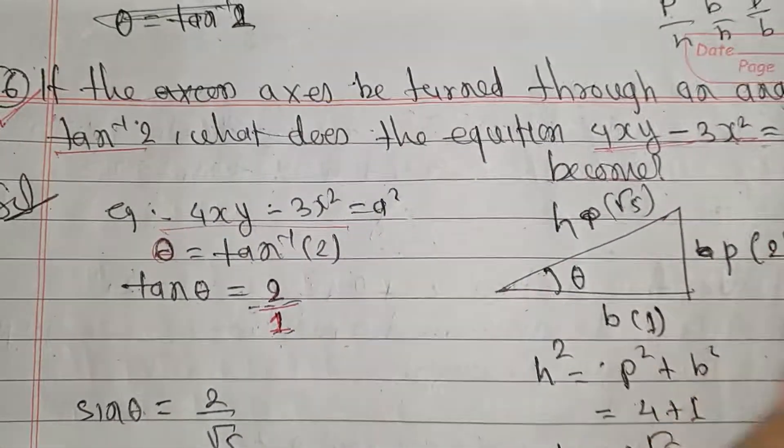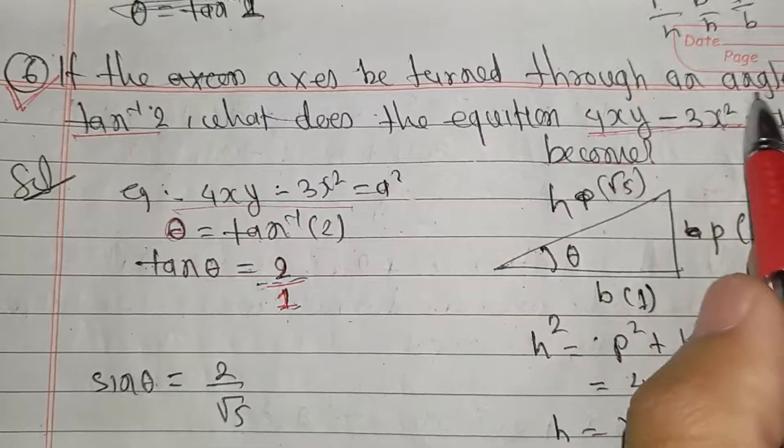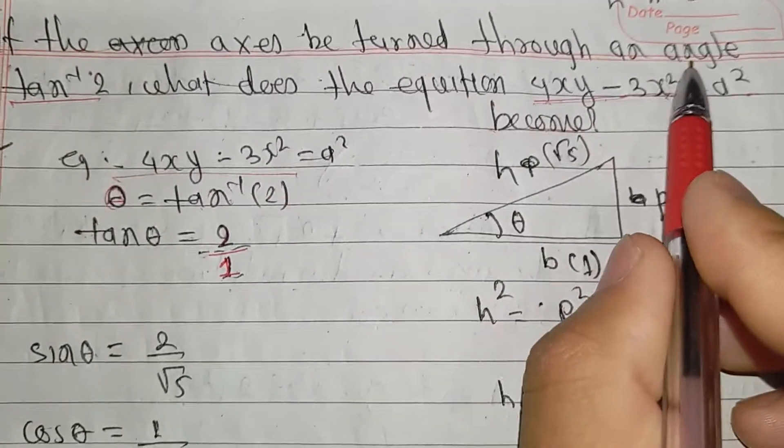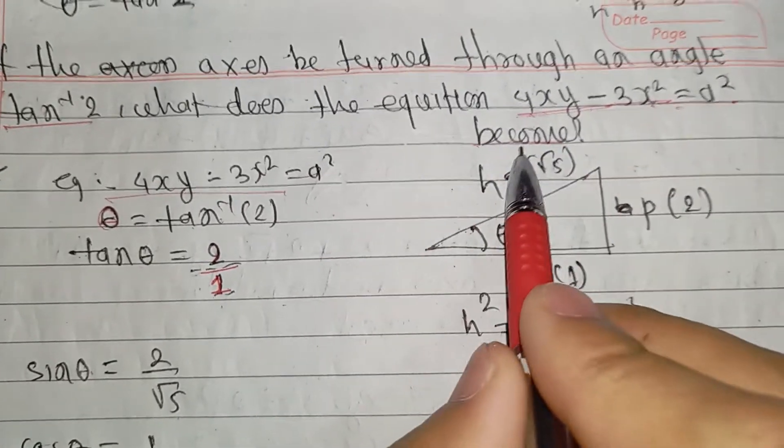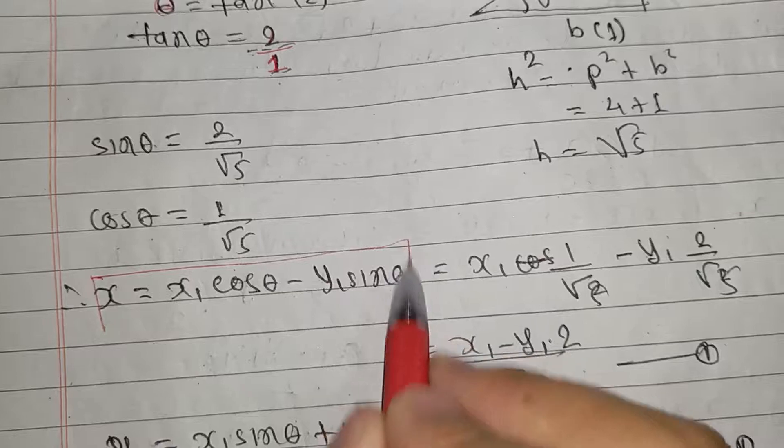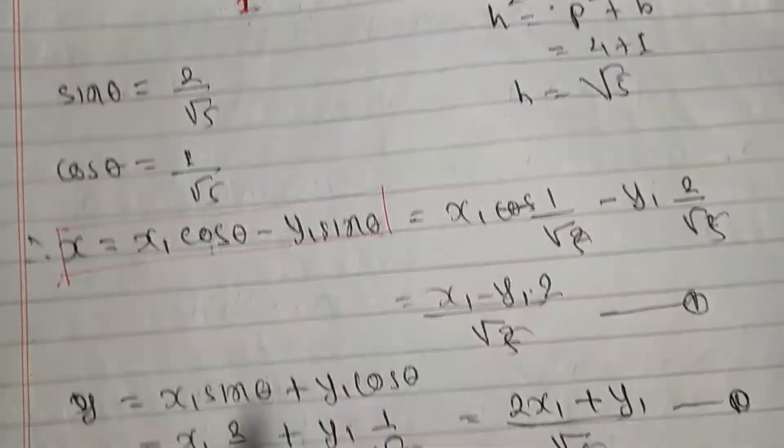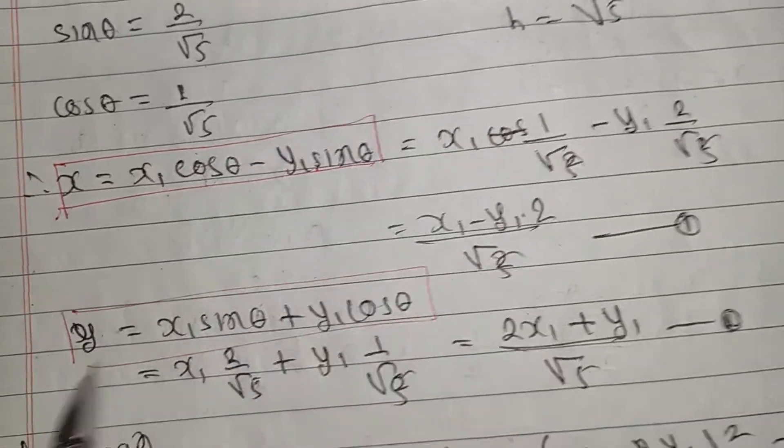The formula you need: x equals x1 cos theta minus y1 sin theta, y equals x1 sin theta plus y1 cos theta.